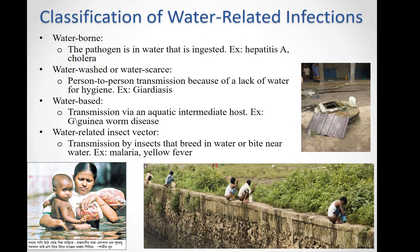Water-related infections can be classified into four types: waterborne, water-washed or water-scarce, water-based, and water-related insect-vector diseases. Waterborne diseases occur when the pathogen is in the water that is ingested — examples include hepatitis A and cholera.